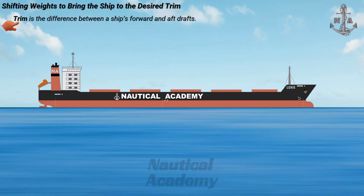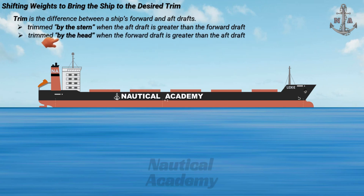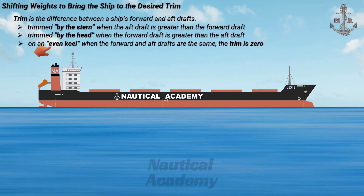Trim is the difference between a ship's forward and aft drafts. The vessel is said to be trimmed by the stern when the aft draft is greater than the forward draft, trimmed by the head when the forward draft is greater than the aft draft, and on an even keel when the forward and aft drafts are the same, meaning the trim is zero.